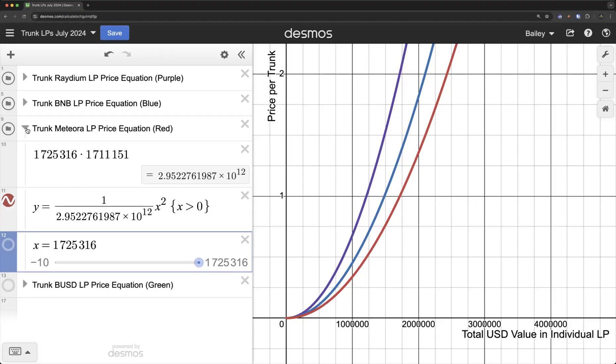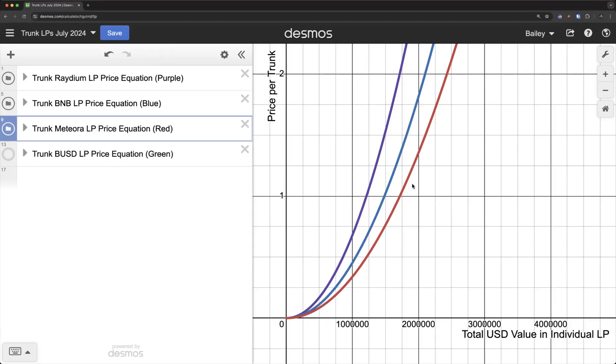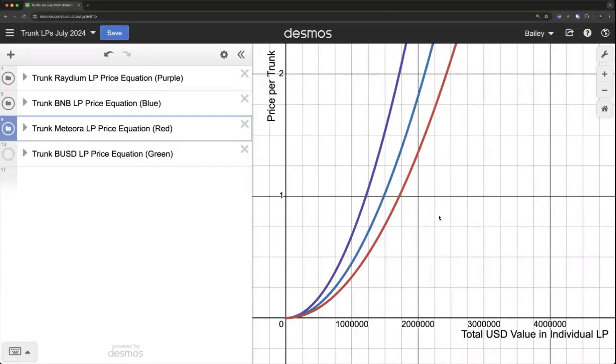You can kind of see that these three equations look very similar in nature. Parabolic, right? As the price goes up, we need less and less capital to actually move the price. We get quicker and quicker as we go, as more capital gets added into these pools.